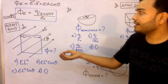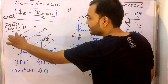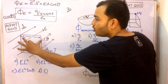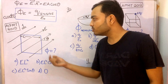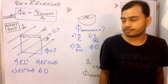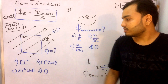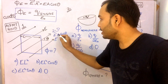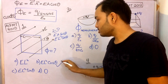Here is the first question from AIPMT 2010. We have a rectangular block with an electric field inclined at θ degrees with respect to the block. The length of the block is L on all sides. We have to find the net flux through the block. The answer might seem like E × L² × cosθ — option B — but that is not correct.